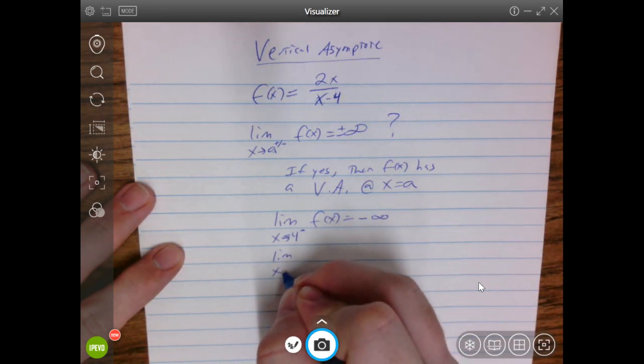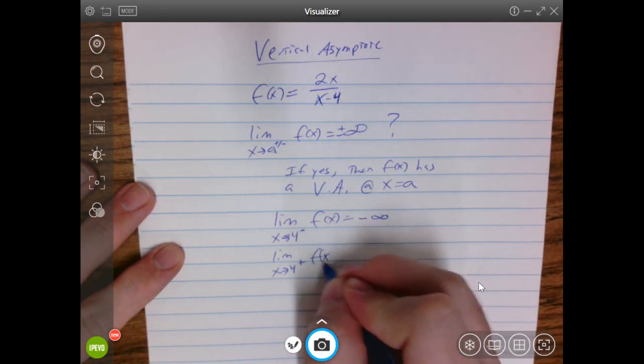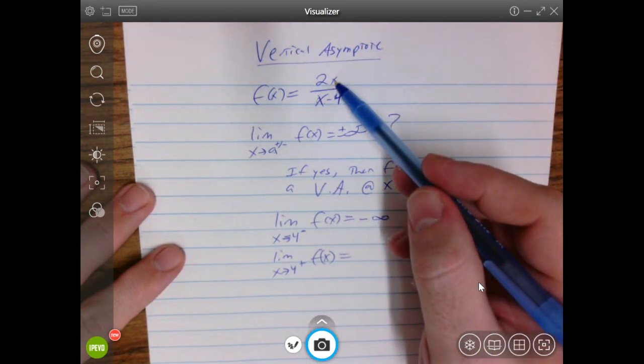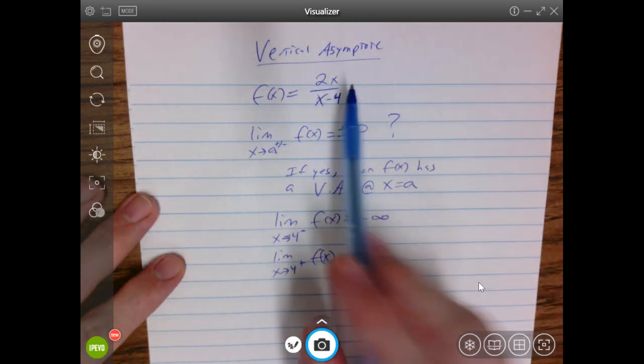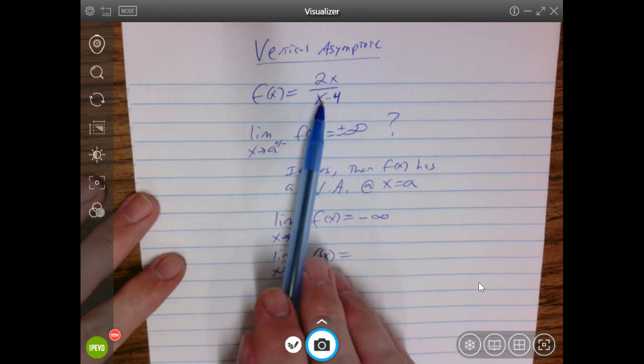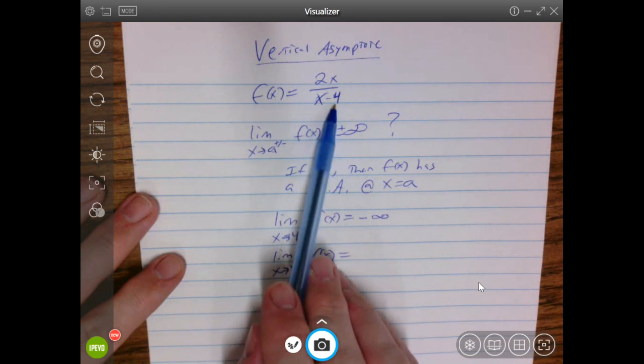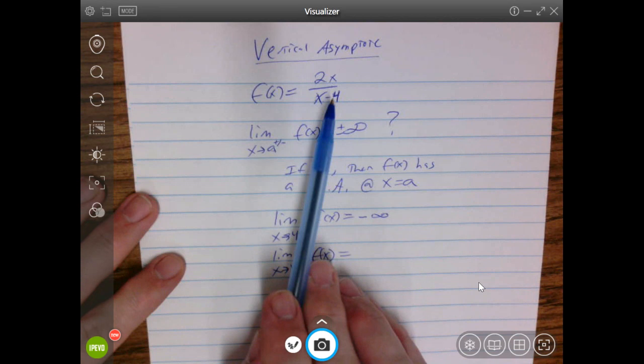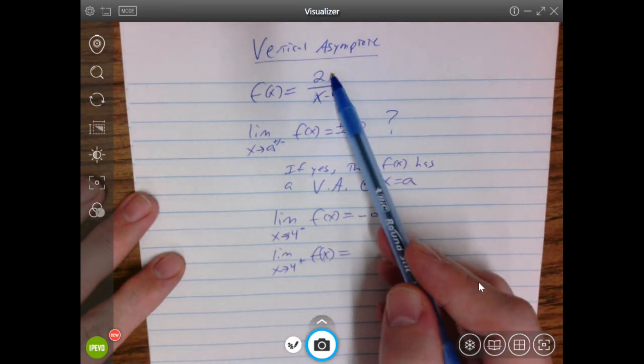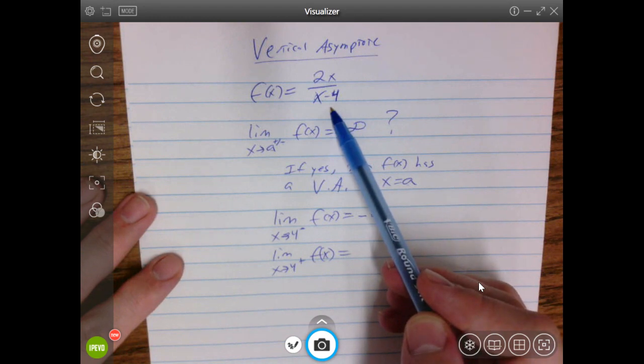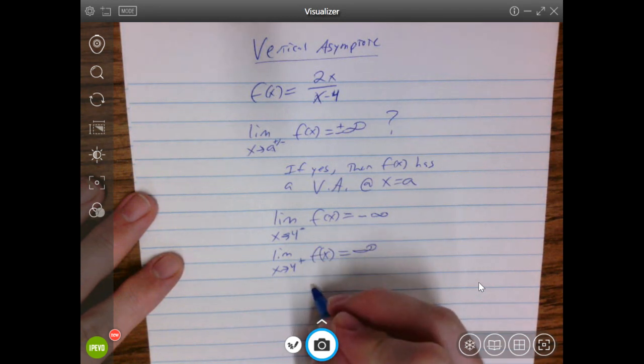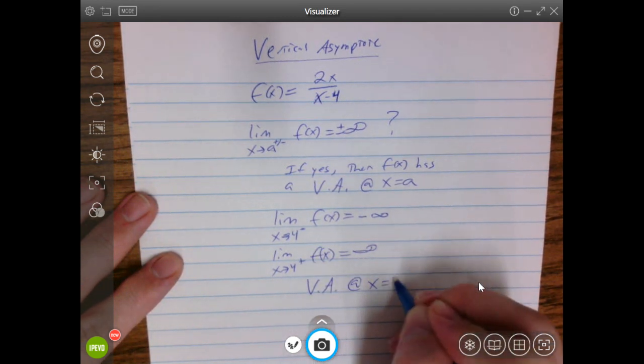Just double-check the other side. As x approaches 4 from the right, so that means the numerator is still approaching 8, but this time a little more than 8, but still 8. Or the limit is still 8, but the value itself is going to be slightly higher than 8. The denominator, I can't get a value, but if I plug in 4.01, I'm going to get positive 0.01. If I plug in 4.001, I'm going to get positive 0.001. So I'm going to get a number divided by really, really small numbers. That's going to infinity. Positive divided by positive is positive. So this function has a vertical asymptote at x equals 4.